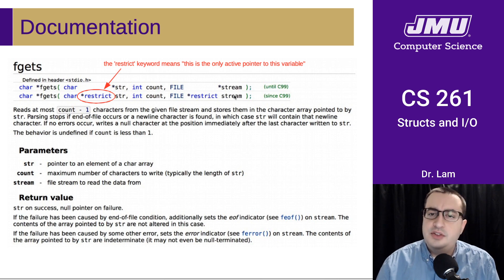Similarly with the stream, but because it's standard input, there's only ever going to be one pointer. So that's fine. So we don't need to worry about the restrict keyword there. Okay, so let's look at the definition, the description of what it does. So it reads at most count minus one characters. So what's the count minus one for? The null terminator. All right, so count minus one characters from the given file stream and stores them in the character array pointed to by str. Okay, so that's the buffer. Parsing stops if end of file occurs, that's good. Or a new line character is found, in which case, str will contain that new line. So that's important to note as well, we're going to get the new line as well as all the text on the line.